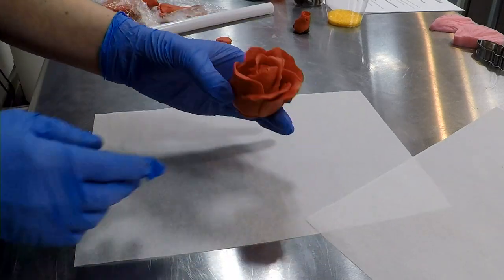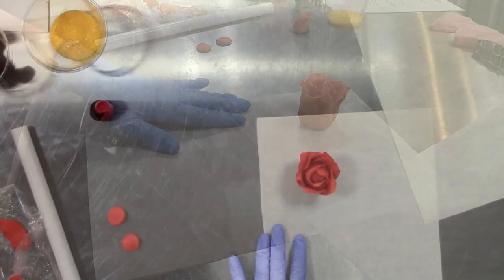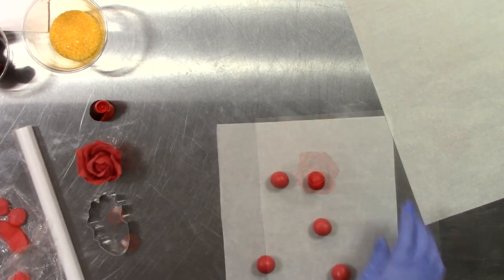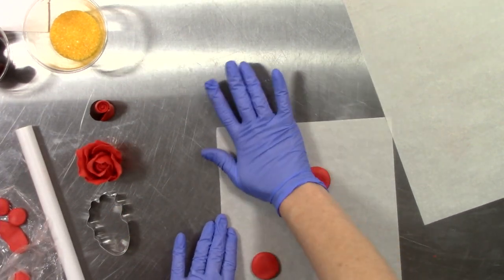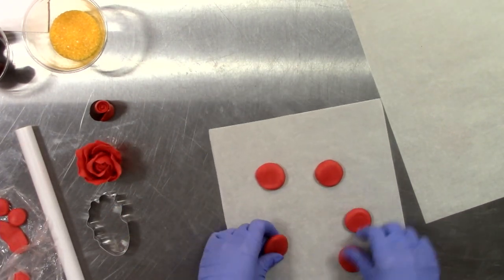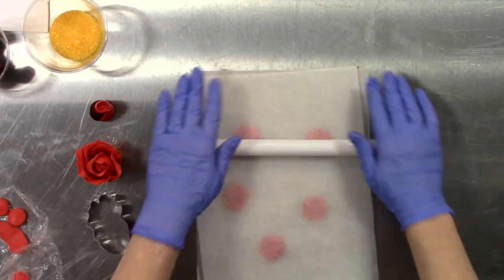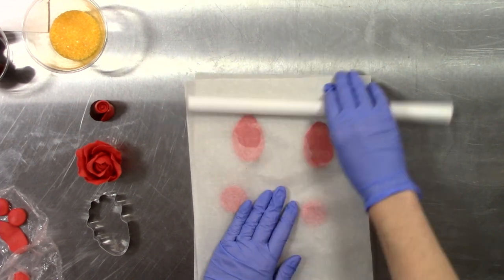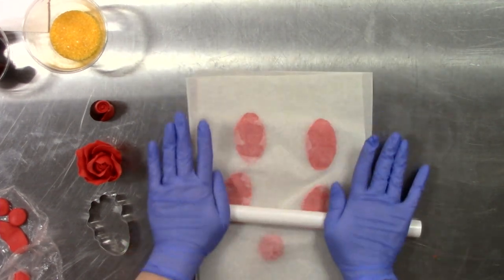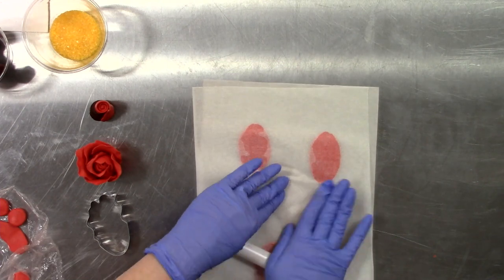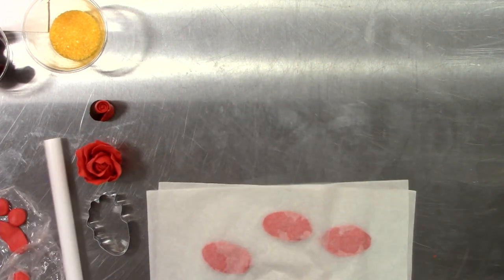Now you could continue this process with just basic petals and finish off your rose, but we also have a technique where you can add veins and details to the petals. Use cookie cutters or petal cutters to create shapes.